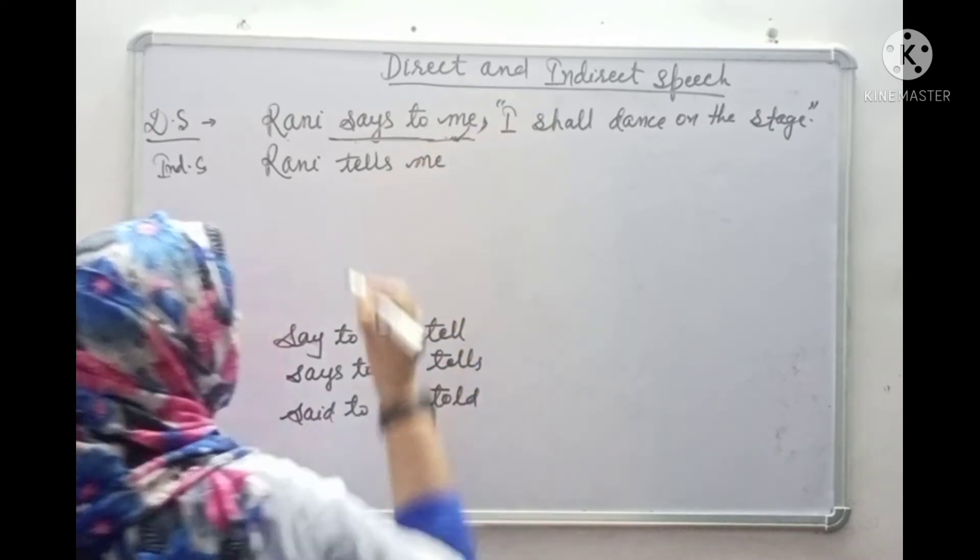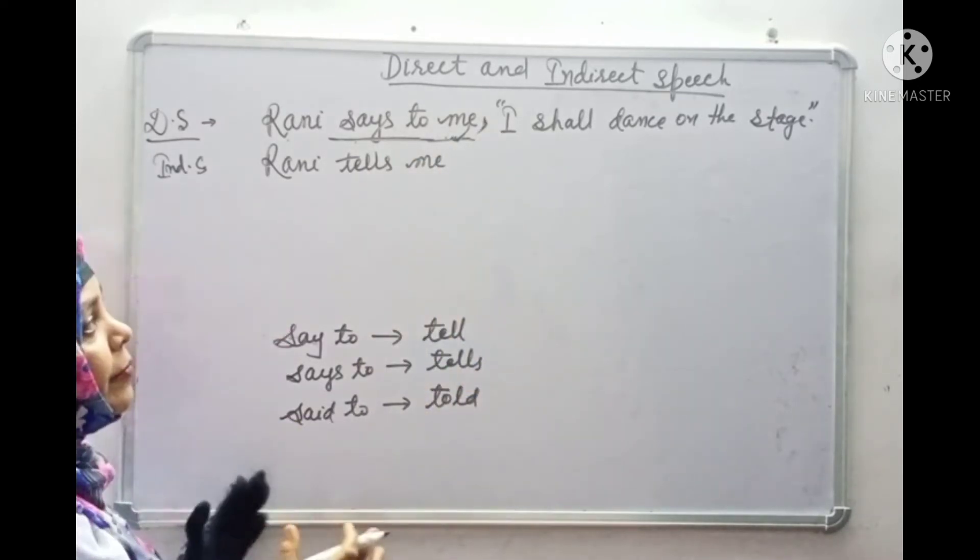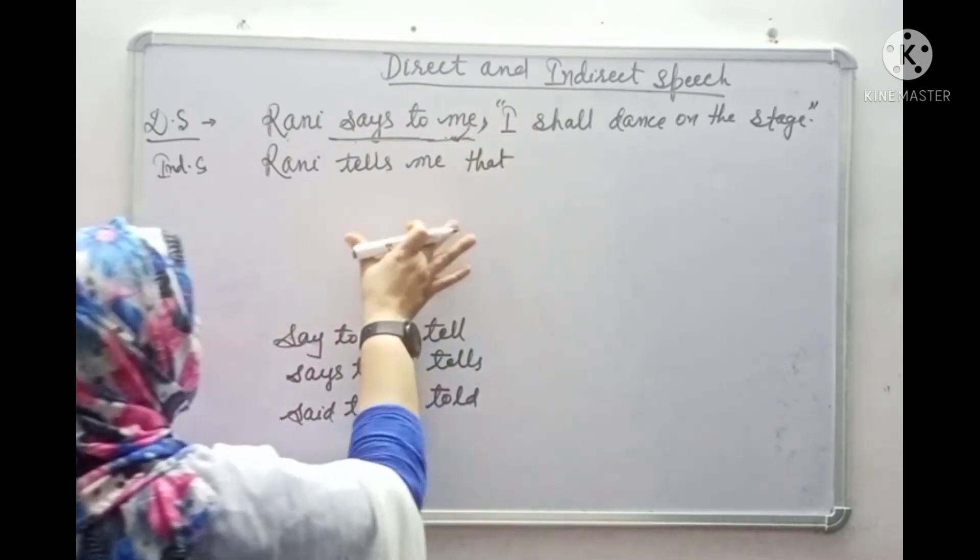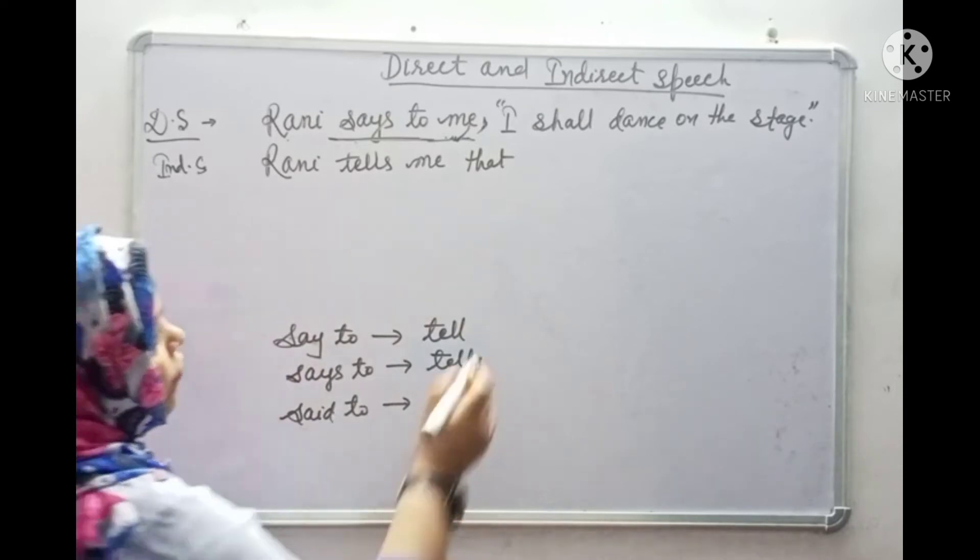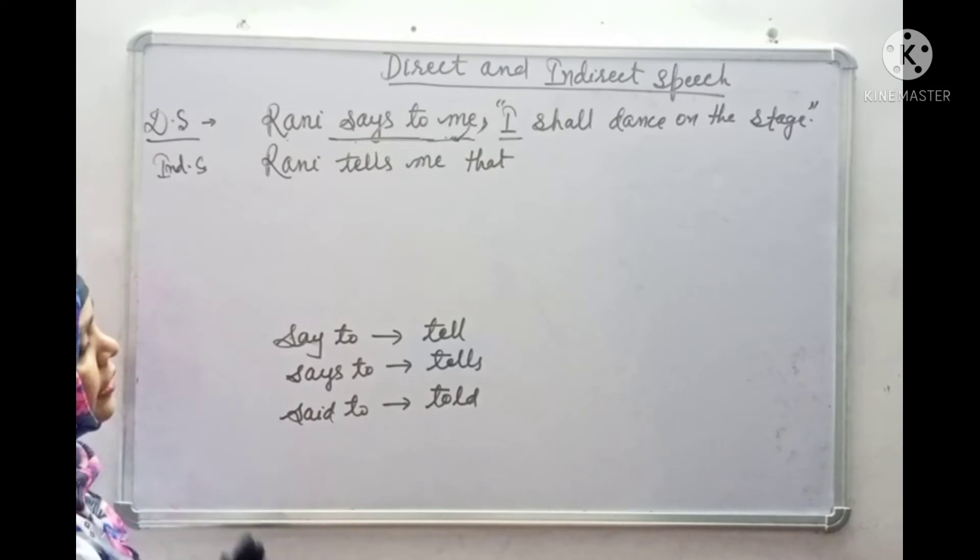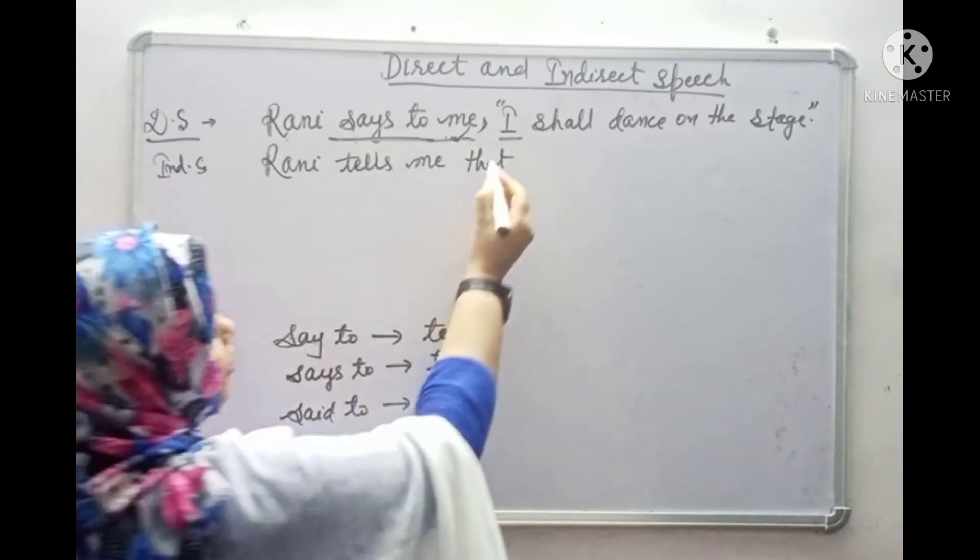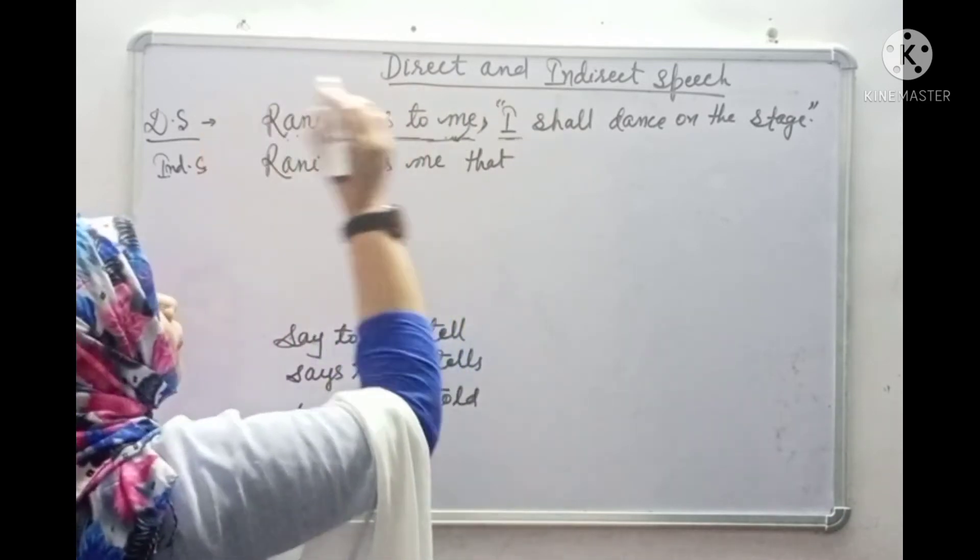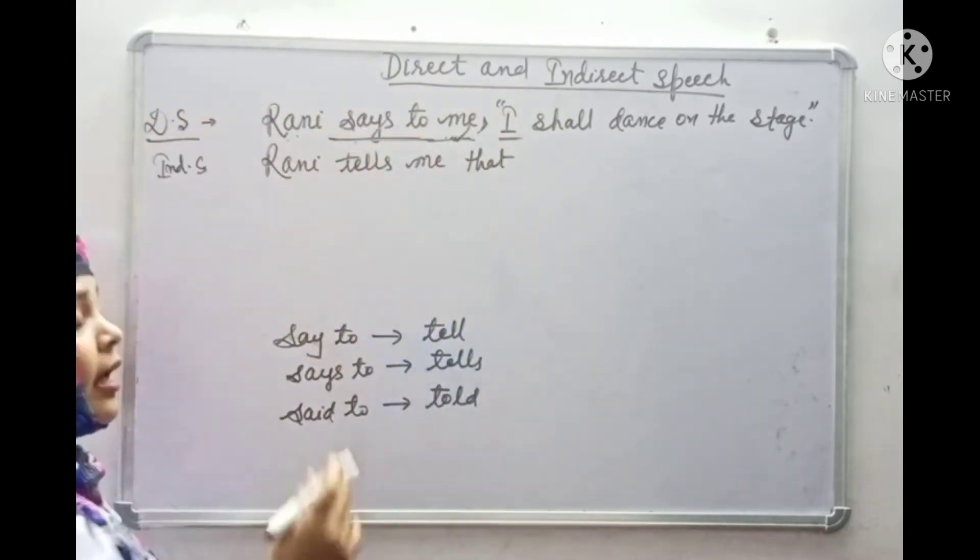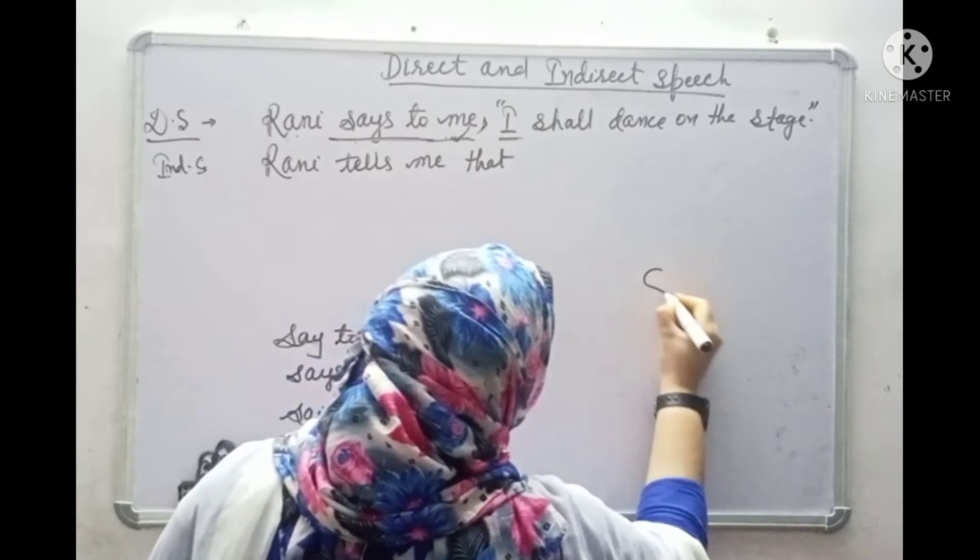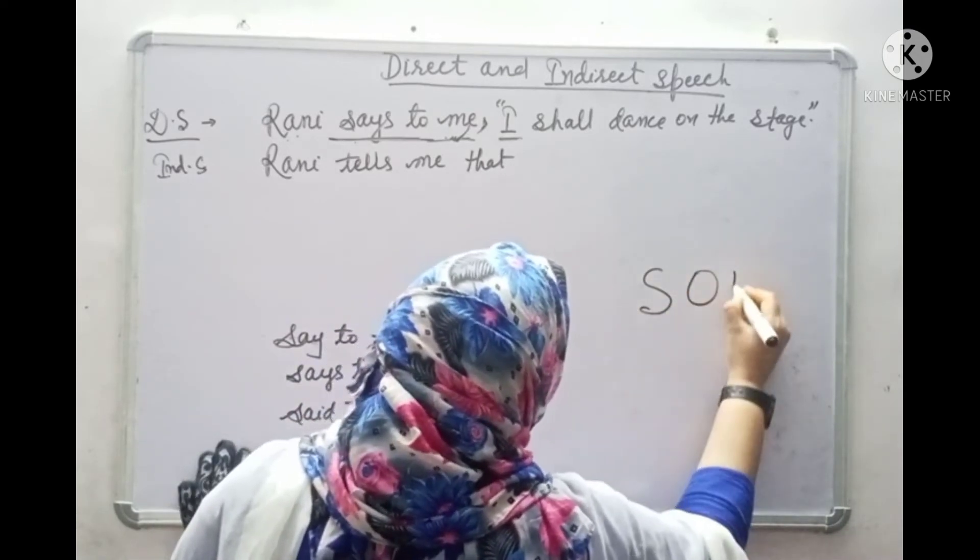Rani tells me. And this comma we remove. After removing comma, we add 'that'. Rani tells me that. Now, what is here? I. I is a pronoun. Just look here. This is the rule. Pronoun changes according to subject. First person changes according to subject. To understand this, we have a very simple and very interesting rule, and that is none other than SON.